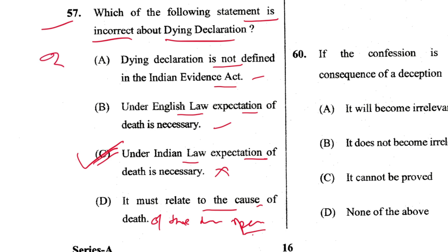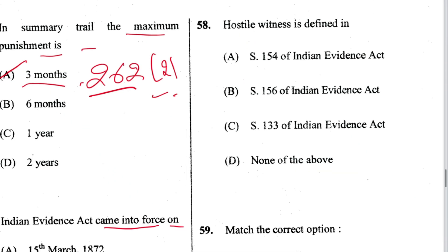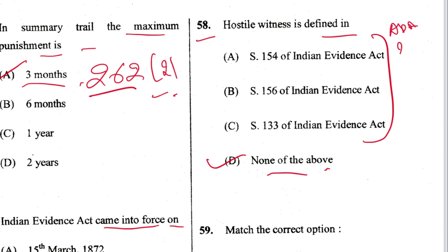Question 58: Hostile witness is defined in — none of the above. D is the answer; it is not defined anywhere in the Act. The same question was asked in the ADA examination paper of 2016.